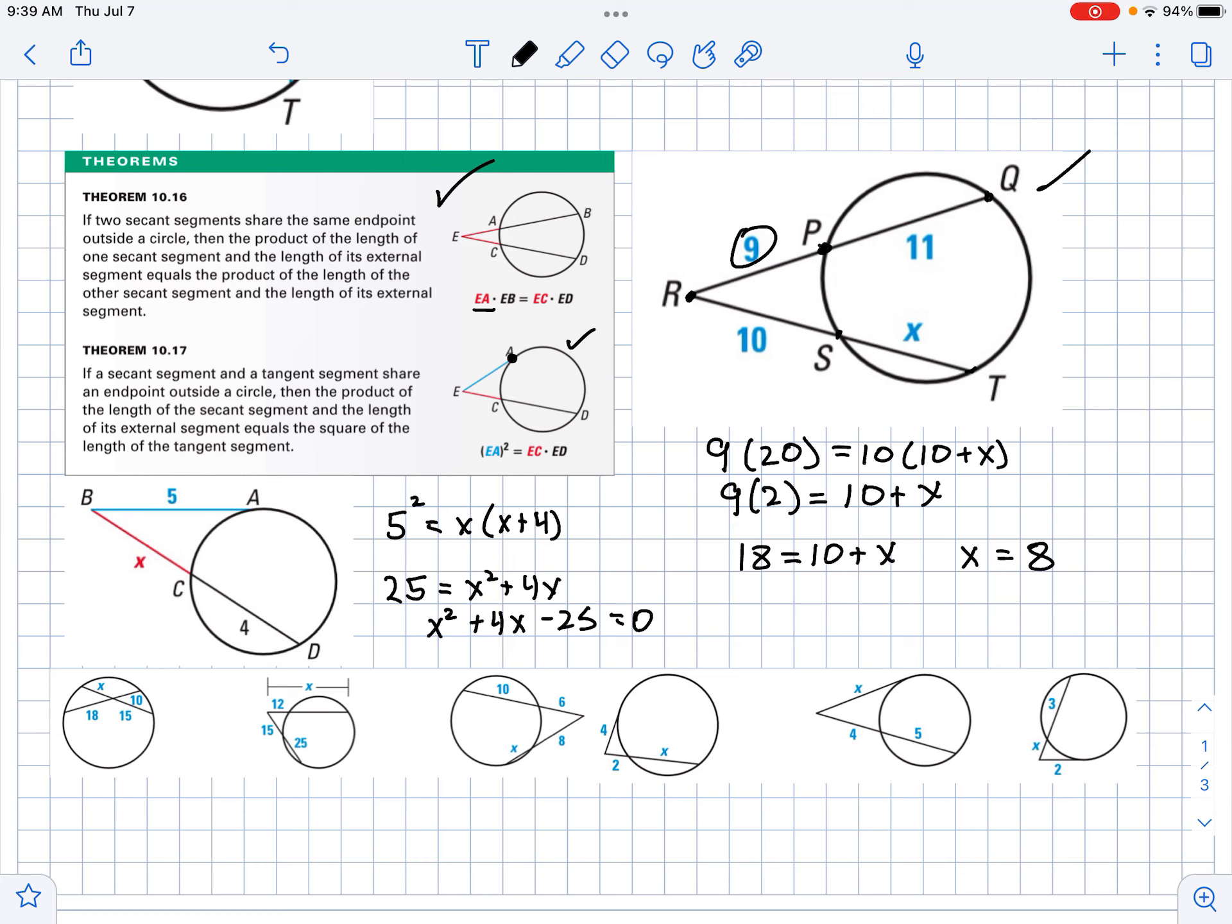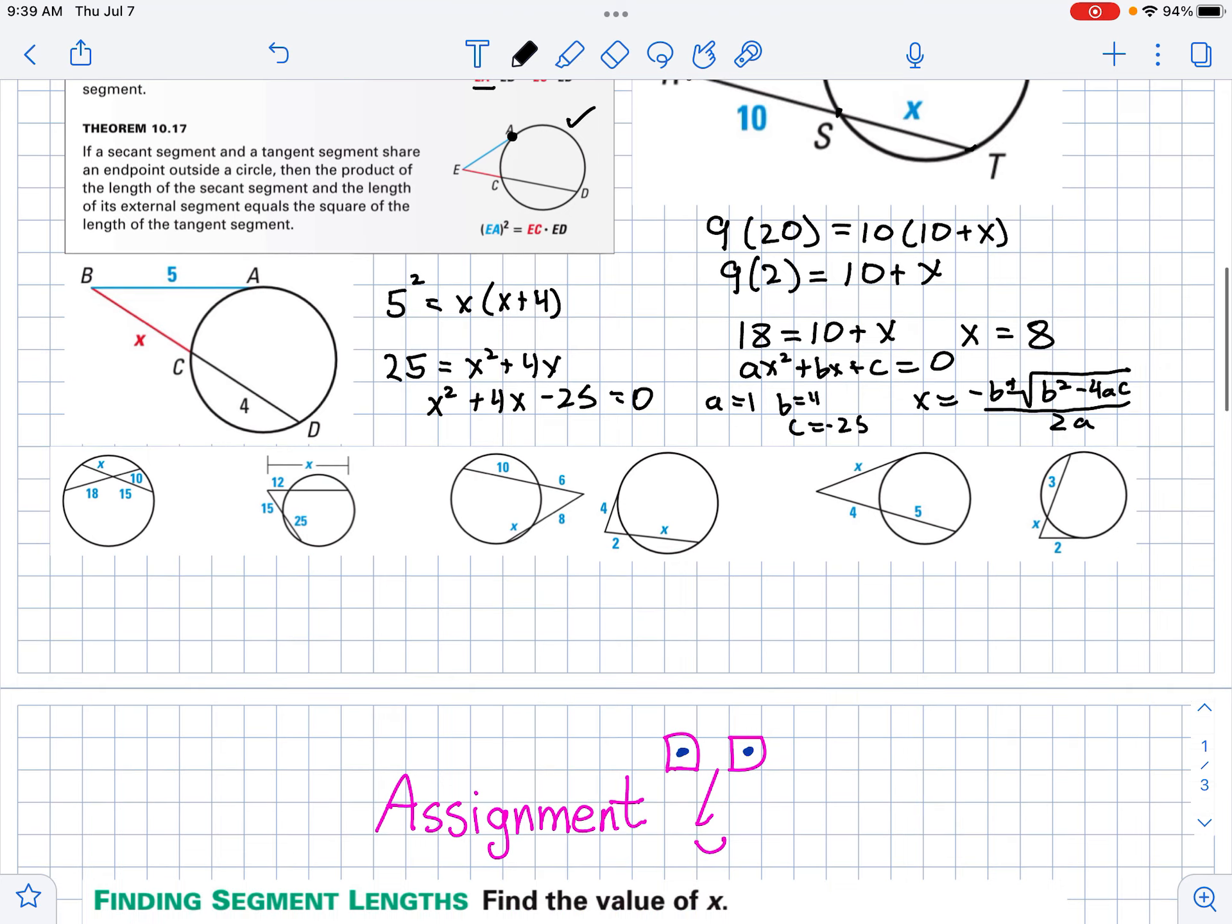Now remember, quadratic formula goes like this. If we have AX squared plus BX plus C equals 0, the quadratic formula tells us that X equals negative B plus or minus the square root of B squared minus 4AC over 2A. So you would need to use that formula to solve for X where A is 1, B is 4, and C is negative 25. But that's not the focus of this video.